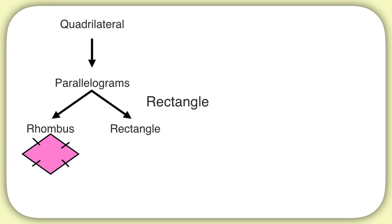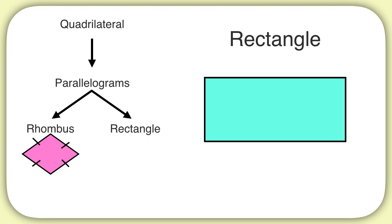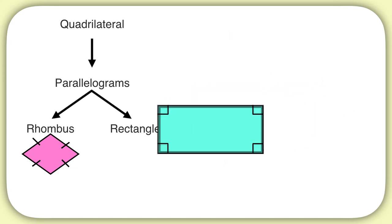What about a rectangle? Well, a rectangle looks like this. It's a parallelogram — it has two sets of parallel sides. But what makes a rectangle special are its angles. Rectangles have four right angles, which will be shown with these square angle signs in each corner. And so that's a rectangle.